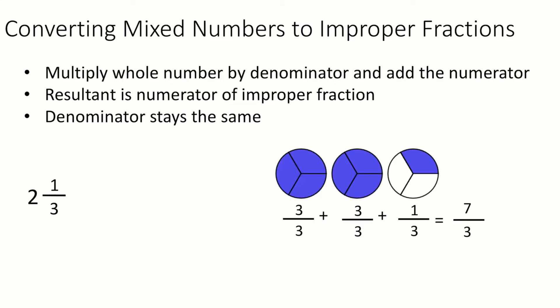So just to go through that formula one more time with a different example, let's take a look at 2 and 1 over 3. So we start by taking the 2 out front and multiplying by the 3 in the bottom, and then adding the 1 that was already there. So 2 times 3 plus 1 in the top, and then we keep the denominator the same.